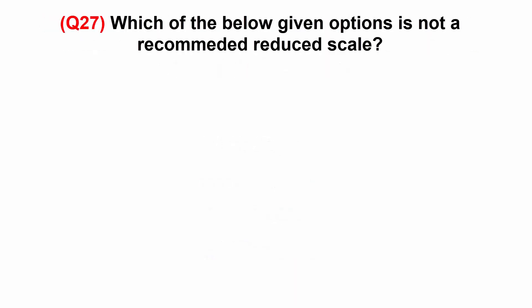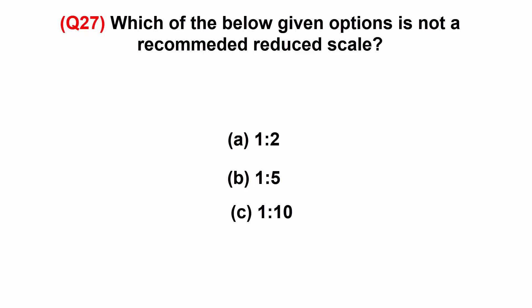Which of the below given options is not a recommended reduced scale? A: 1 is to 2. B: 1 is to 5. C: 1 is to 10. Or D: 1 is to 15.